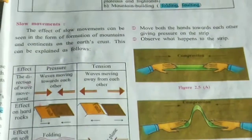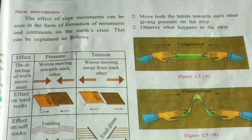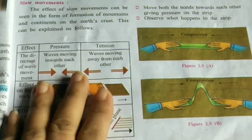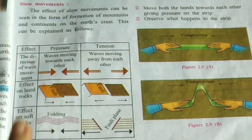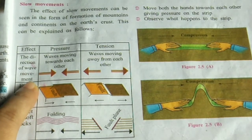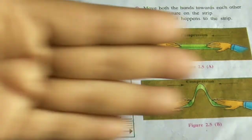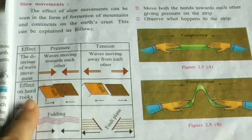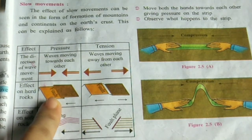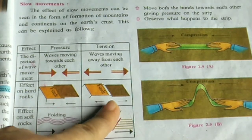We will now study slow movement. The effect of slow movement can be seen in the formation of mountains and continents on the earth's crust. The effects include pressure and tension. When waves move towards each other, pressure is created. Tension occurs when waves move away from each other. The effects on hard rock result in faulting — one direction is towards each other, the other is away from each other.